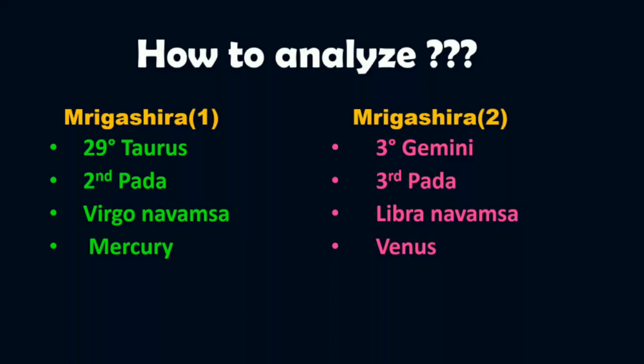Both individuals will carry qualities related to their respective ruling planets — Mercury and Venus — but with different expressions. The second pada of Mrigashira in the Virgo navamsha produces someone quite logical and analytical, whose mind is inclined toward scientific research. The third pada in the Libra navamsha represents someone also logical and curious, but whose mind is more inclined toward relationships and who is very artistic. This is how we analyze the janma nakshatra to get better predictions and understand yourself much better.